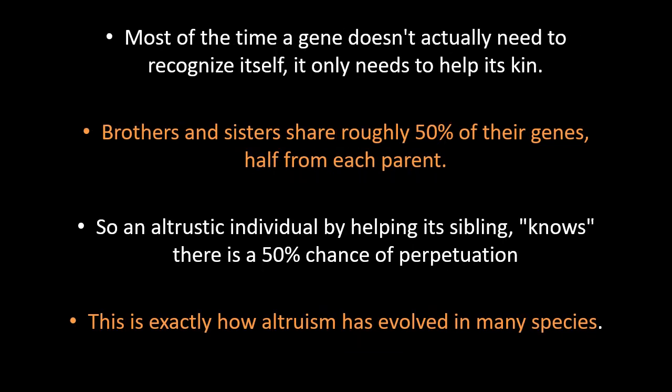Most of the time, a gene does not actually need to recognize copies of itself — no need for green beard or brain processes — but only needs to help its kin. Because an organism knows that some portion of its altruistic gene is also present as a copy in its relatives. We know brothers and sisters share roughly around 50% of their genes, so an altruistic individual helping siblings knows there is a 50% chance it is helping a copy of itself. That is exactly how altruism has evolved in many species.